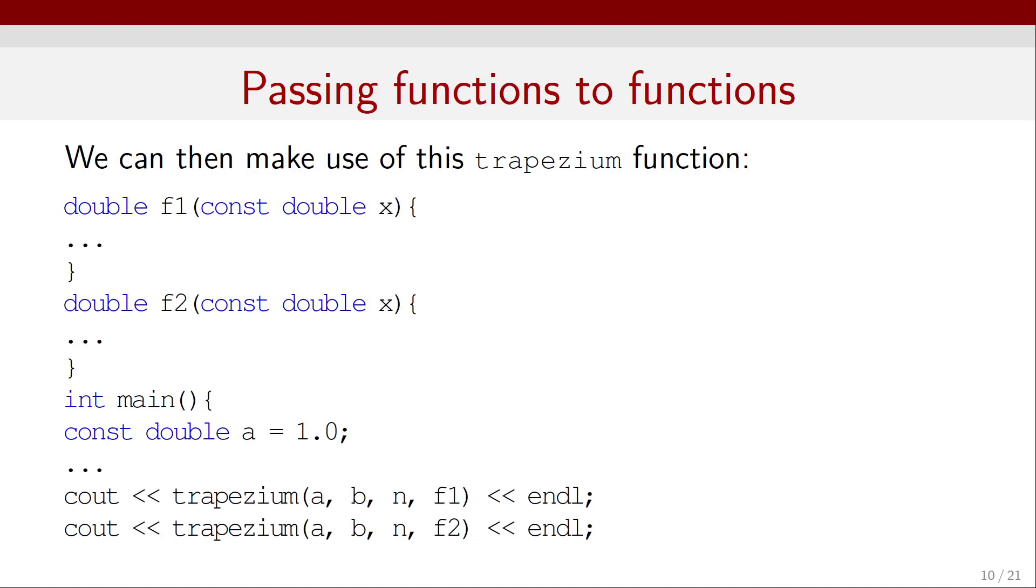We can then make use of this trapezium function. For example, let's define some double function f1 and another double function f2 with their arguments. These are one-dimensional mathematical functions. Then inside our main function, we can call the trapezium rule and integrate these functions. I can just say trapezium from a to b using n steps and apply that to f1, which will integrate the function from a to b using n steps. I can use the same command but just replace f1 with f2. That's a very convenient way to program, a very modular way to program.